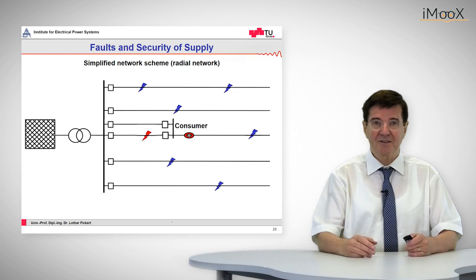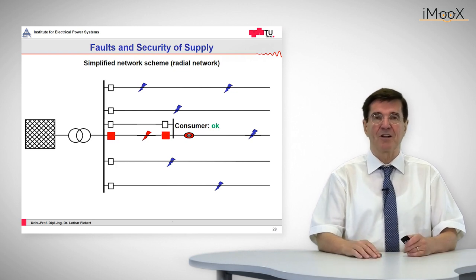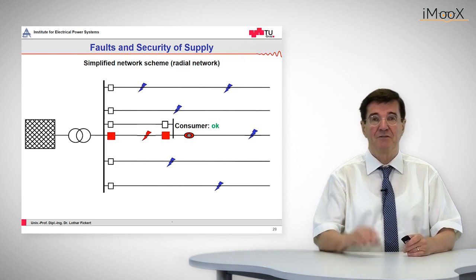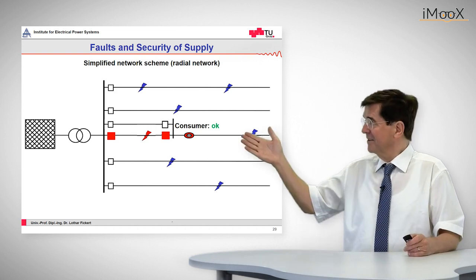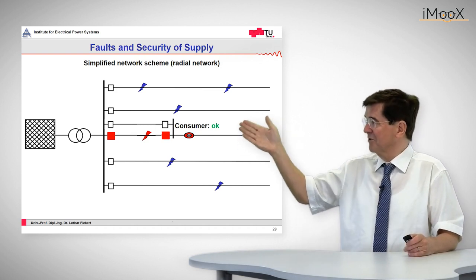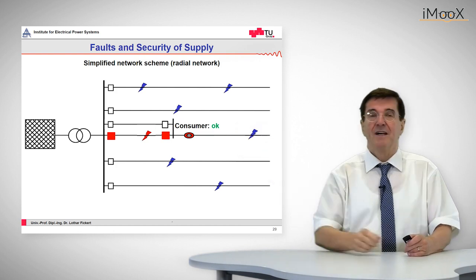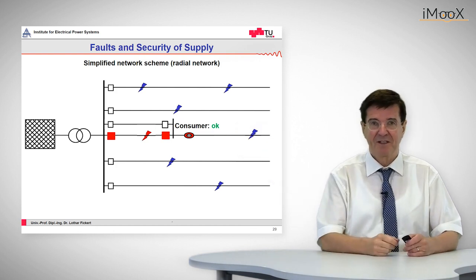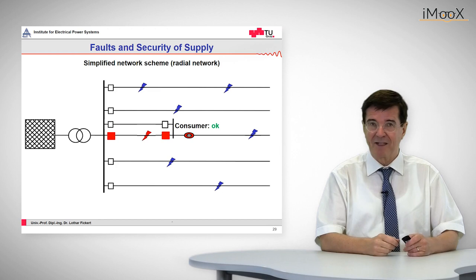The fault occurs and is tripped out by the unit protection of this very feeder. As you can see here, the electricity comes from the bus bar, goes to the upper healthy line, and reaches the consumer. So the consumer is supplied again.